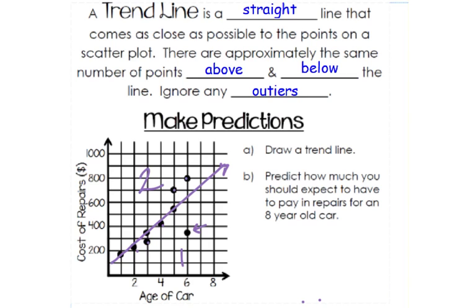How you would do this: age of car is on the x-axis, so we would go to where eight is and follow this up to where our trend line is. Once we got to our trend line, we would go across to see what the cost would be or what the y value would be. If you go across here, you're a little bit above $800, so for an eight-year-old car you would expect to pay approximately $800, maybe a little bit more.